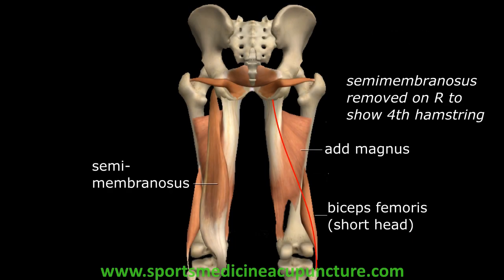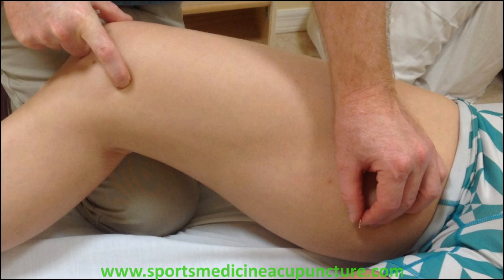In the thigh, the kidney sinew channel consists of the semimembranosus, the biceps femoris short head, and the adductor magnus. The biceps femoris short head creates a fascial continuity with the adductor magnus, creating a fourth hamstring as discussed by Tom Myers in Anatomy Trains. Distally, the adductor magnus and the semimembranosus both have attachments into the medial collateral ligament. Proximally, these myofascial structures blend in with the pelvic floor and anterior sacral fascia.